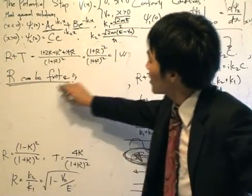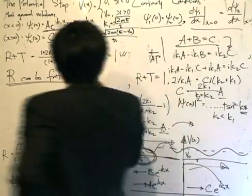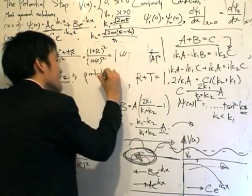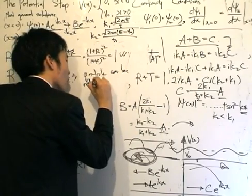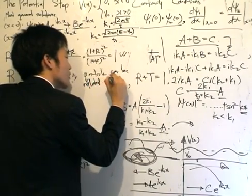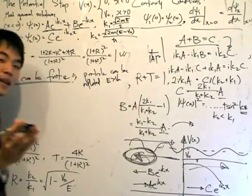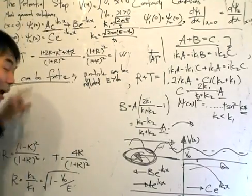All our work amounts to this statement over here. R can be finite, and that will mean particles can be reflected even though E is greater than V-naught, unlike classical mechanics. Now this is our ultimate result.